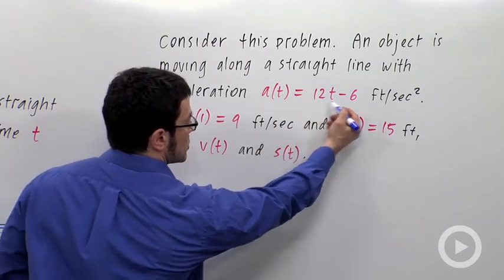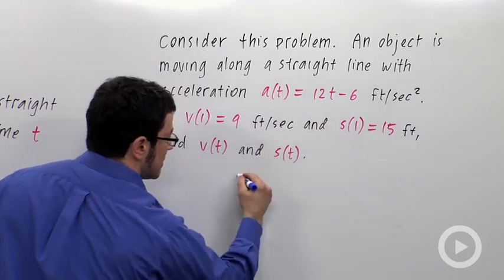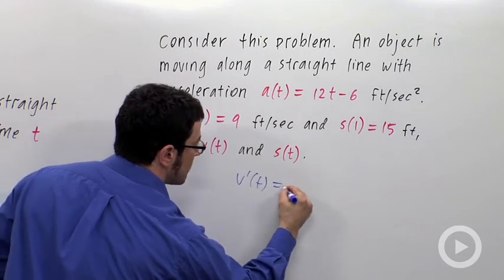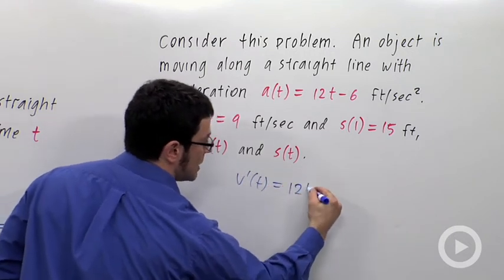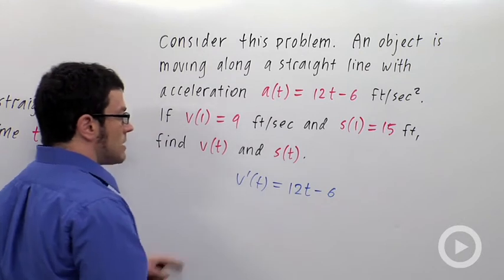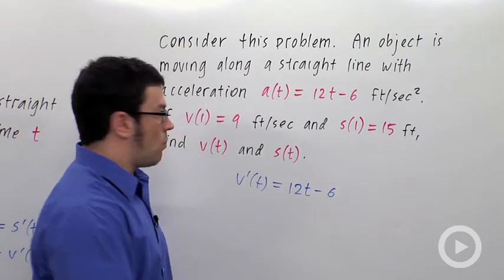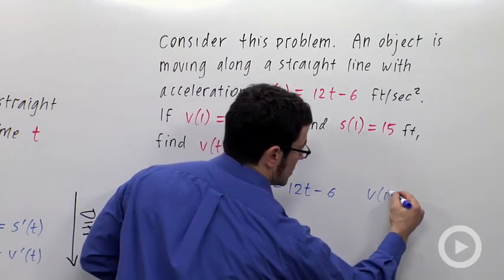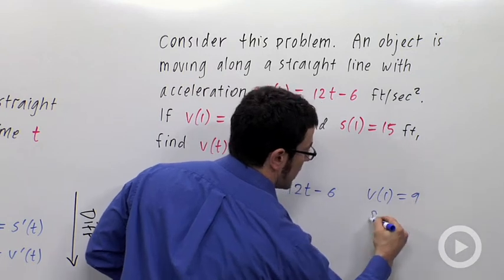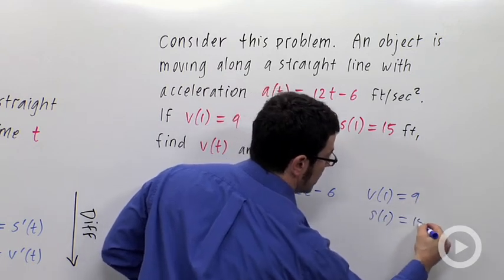If a(t) = 12t - 6 and a(t) is v'(t), this is a differential equation: v'(t) = 12t - 6, subject to the initial conditions v(1) = 9 and s(1) = 15.